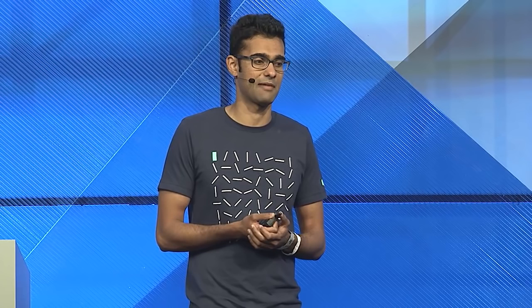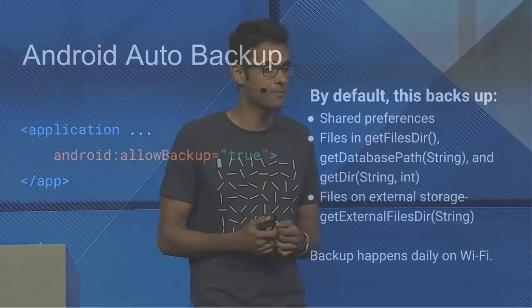The Auto-Backup API requires just a single line added to your manifest, and it backs up everything wholesale — including shared preferences, files, and databases. You can also define custom XML include and exclude rules. All data is persisted in a private folder in the user's Google Drive, limited to 25 megabytes per user per app, which doesn't count against their Drive storage, and only the most recent backup is stored. Note that Auto-Backup is limited to Marshmallow and above.